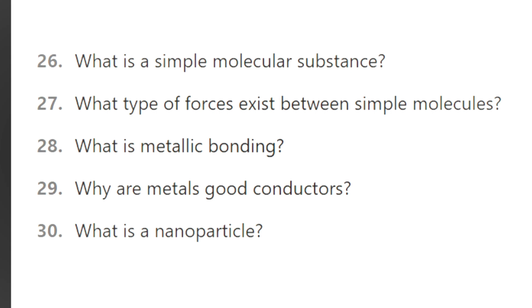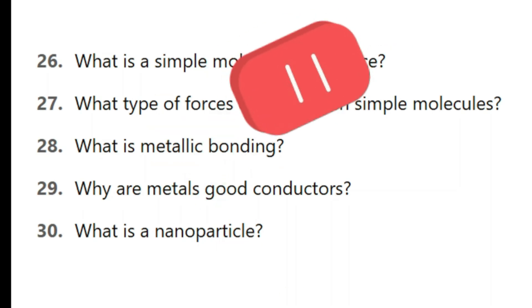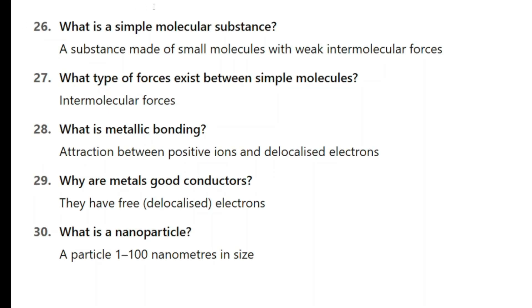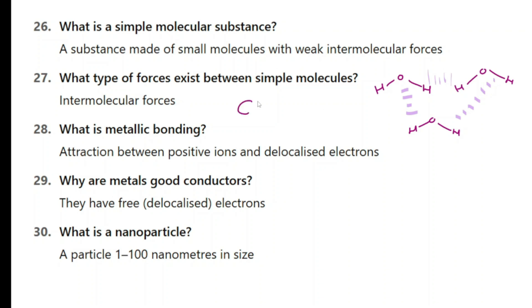Here are the next five questions, 26 to 30. Pause the video and try these questions. Question 26: what is a simple molecular substance? A substance made of small molecules with weak intermolecular forces. For example, water — you have individual water molecules and between these molecules there are weak intermolecular forces. Substances like these are called simple molecular. Some other examples are methane and carbon dioxide, which have only a few atoms.